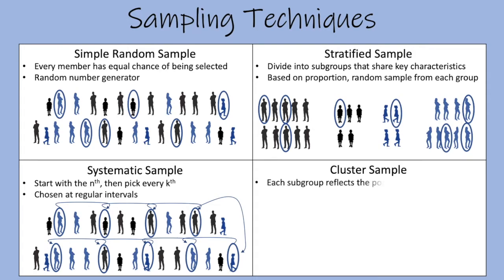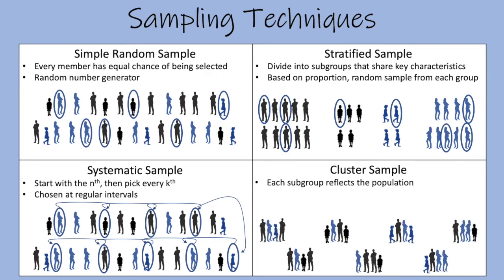The cluster sample. So we're going to use subgroups again. But this time, each subgroup reflects or kind of looks similar to the population as a whole. And then from here, whole groups are selected at random.